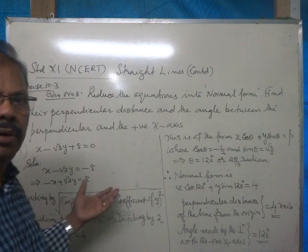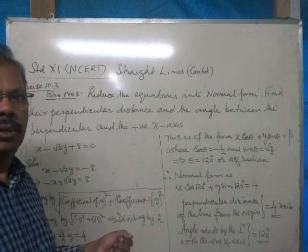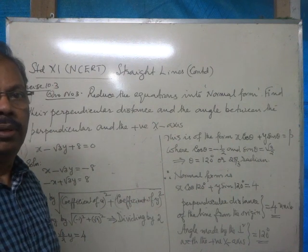Then, the whole equation is divided by square root of x coefficient squared plus y coefficient squared.